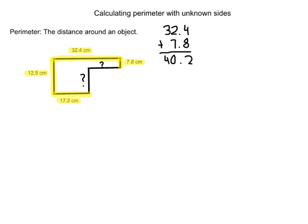Then we're going to add the other known side, which is 17.2 centimeters. We have 4, 0 plus 7 is 7, and we have 57.4.